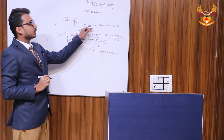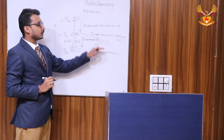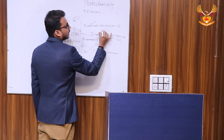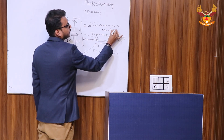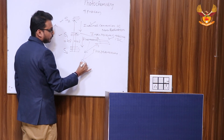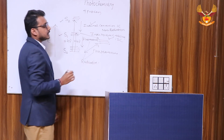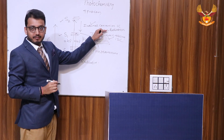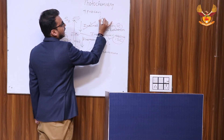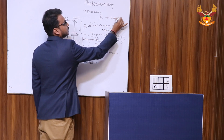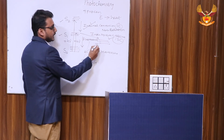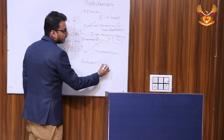Out of these four processes — internal conversion, fluorescence, inter-system crossing, and phosphorescence — internal conversion and inter-system crossing are the non-radiative processes, while fluorescence and phosphorescence are the radiative processes. In non-radiative processes like IC and ISC, the energy is lost in the form of heat, whereas in radiative processes like fluorescence and phosphorescence, the energy is lost in the form of light.